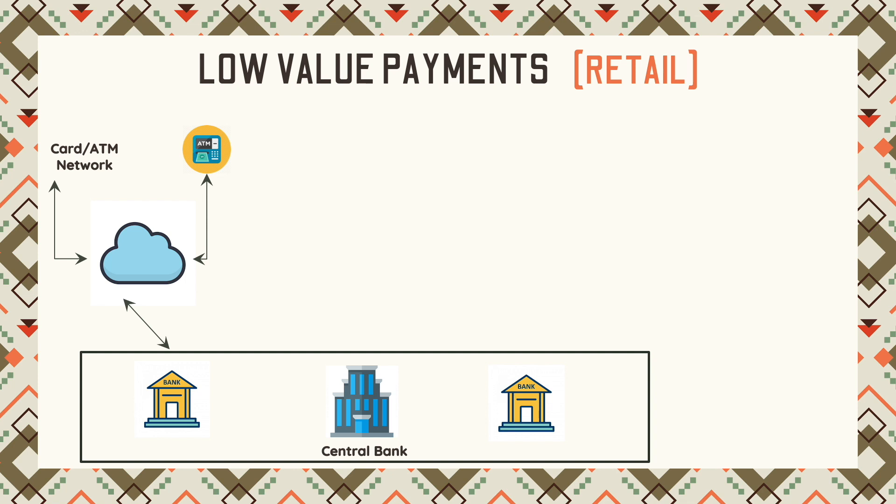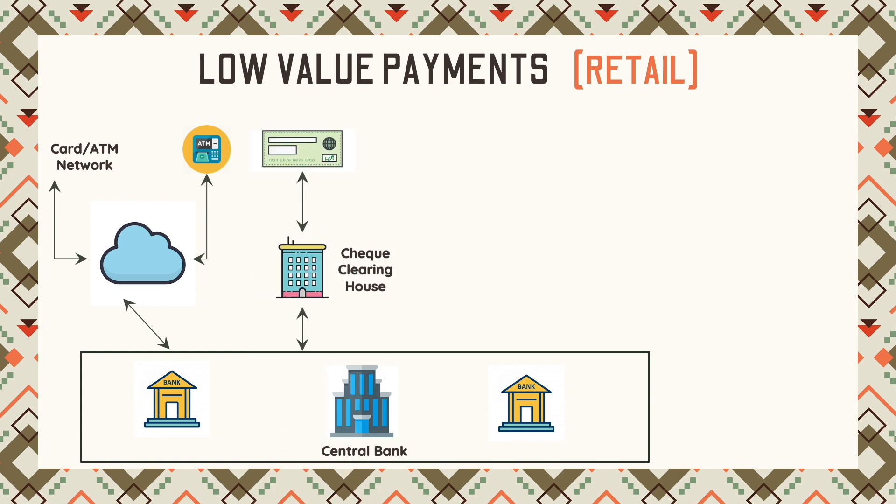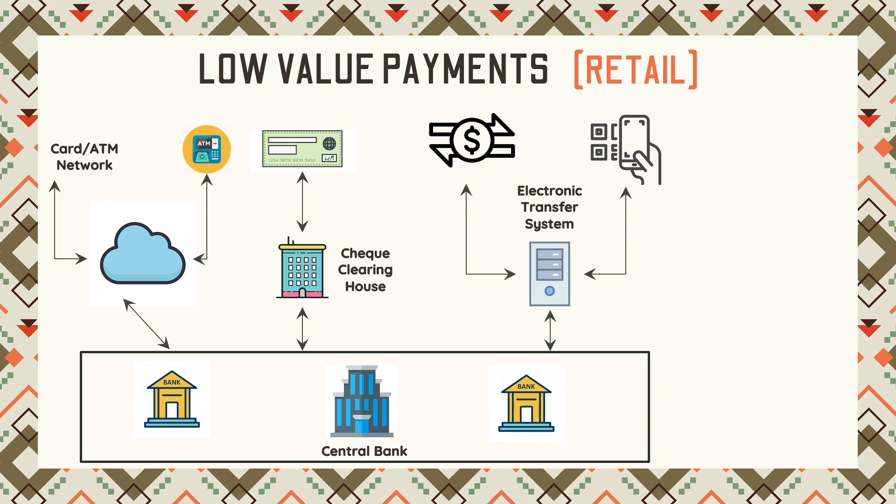Let us look at the various retail payment instruments. First, the ATM and POS network, where there is a common scheme that interconnects the banks, and the payment cards issued by the banks are used as payment instruments at ATM or POS machines. This scheme and network infrastructure is an important institution. The second one is one of the oldest payment instruments: check-based payment. Every country would have their own check clearing house, which helps the banks work between them and clear the checks. The third is an electronic transfer system — about two and a half decades old — where account holders can transfer money to other accounts in the same or other banks using a web portal or mobile banking. These electronic transfer systems have also been extended for mobile-based QR transfers.